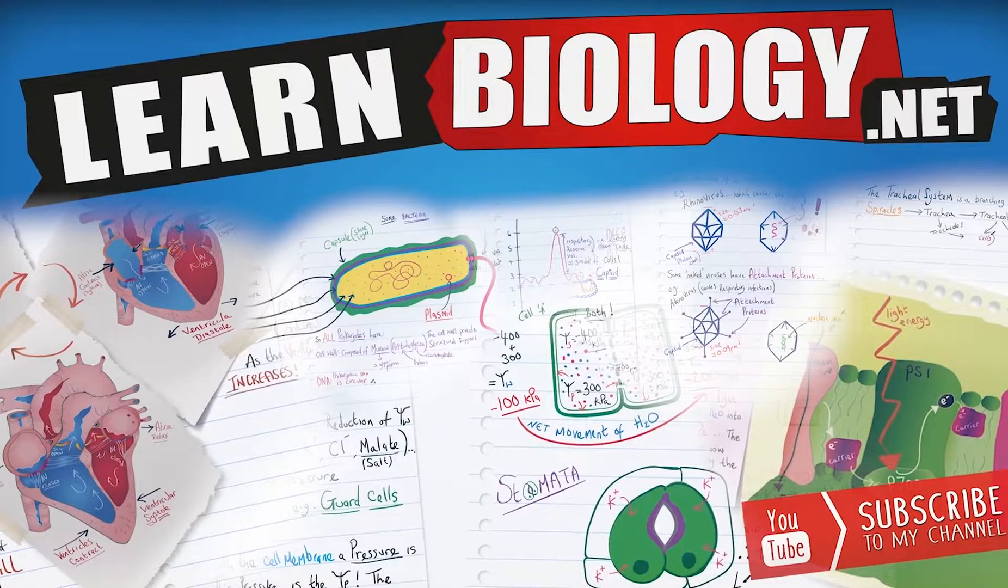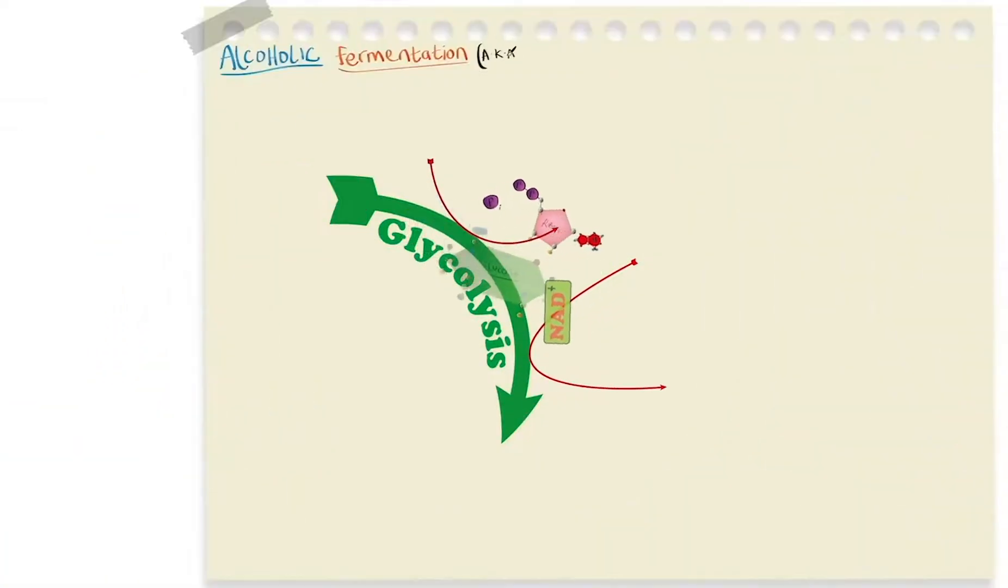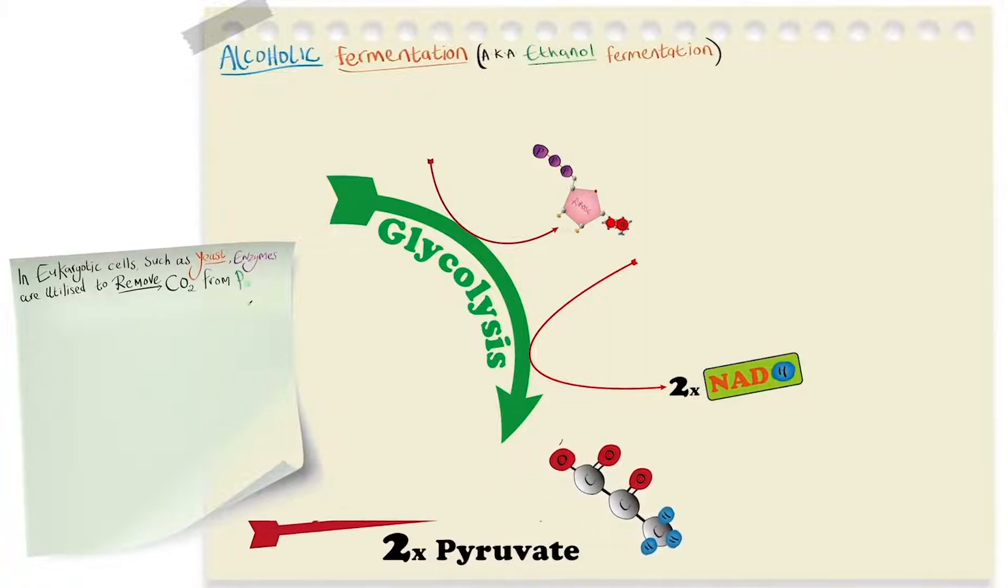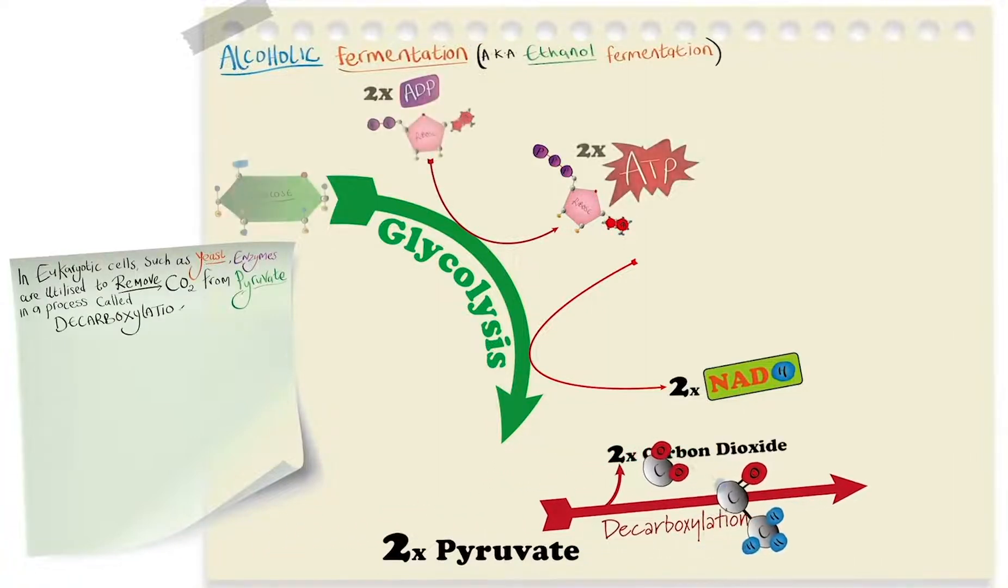Let's take a look at alcoholic fermentation, also known as ethanol fermentation. In eukaryotic cells such as yeast, enzymes are utilized to remove carbon dioxide from pyruvate in a process called decarboxylation.